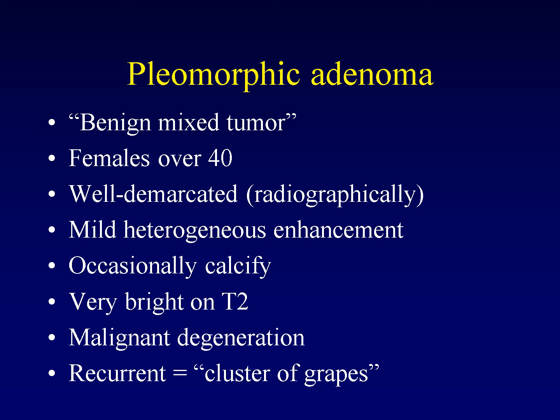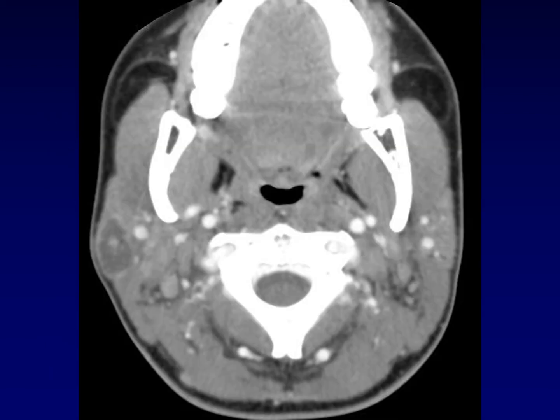When pleomorphic adenomas recur, they recur in a pattern referred to as a cluster of grapes — numerous small rounded recurrences throughout the surgical bed. Here's an example of a pleomorphic adenoma in the superficial lobe of the right parotid gland. You can see it has a rim of enhancement and some heterogeneous central enhancement, and it is well defined. There's nothing specific about this image for pleomorphic adenoma, but it is the most common tumor and would be at the top of the differential diagnosis.